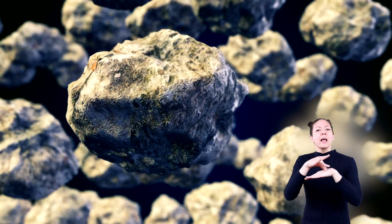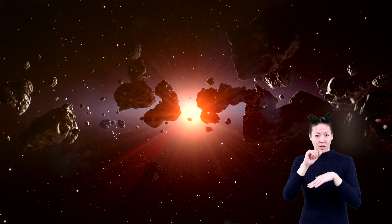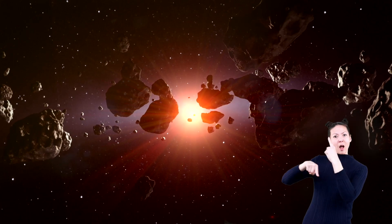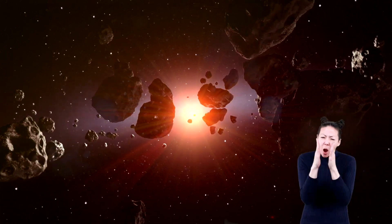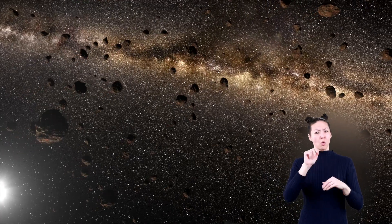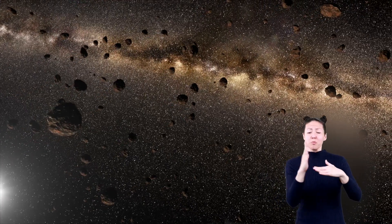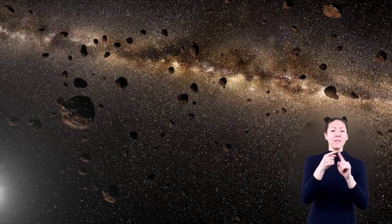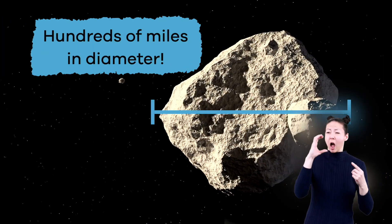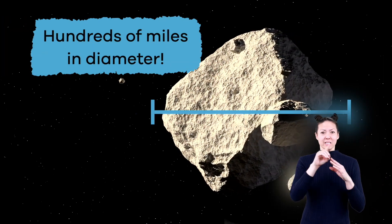Like planets, asteroids also orbit the sun, but they are much smaller than planets. There are millions of asteroids in our solar system. They can range in size from a tiny piece of dust to hundreds of miles in diameter.